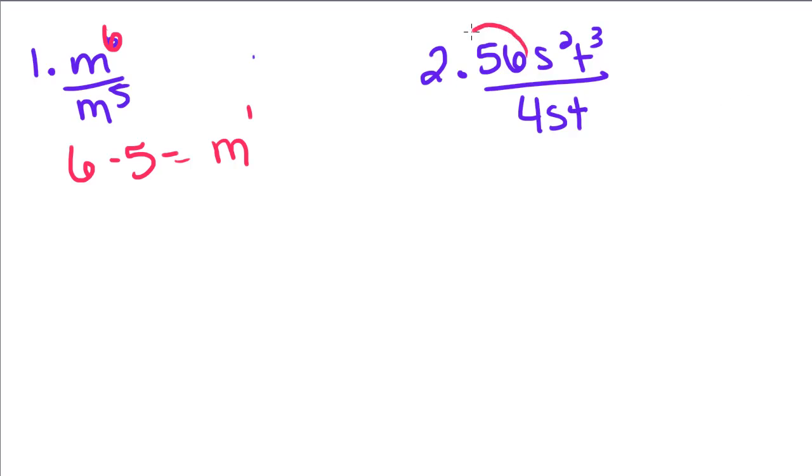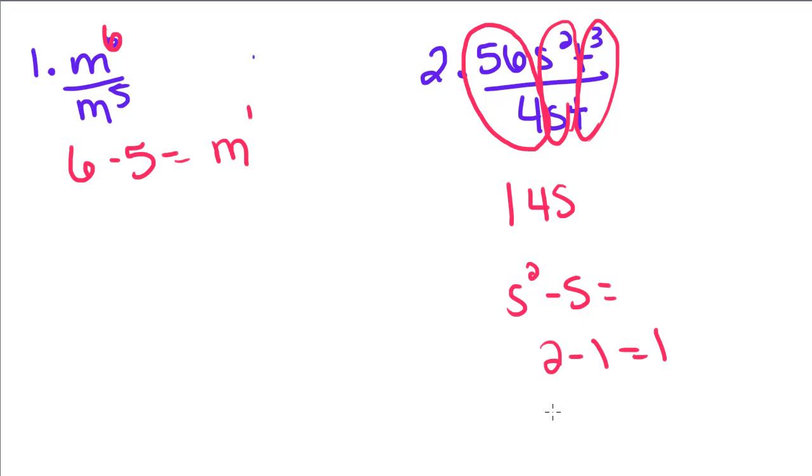So again, we're going to divide only the like terms. So 56 divided by 4 is 14. s squared minus s is going to be 2 minus 1, which is 1. So since it's positive, the s goes on top. t cubed minus t is going to be 3 minus 1, gives us 2, so that stays on top as well.